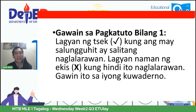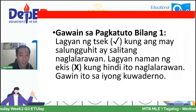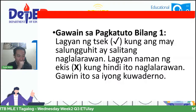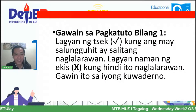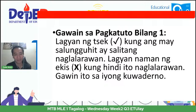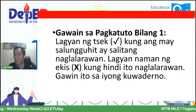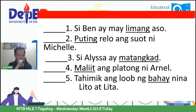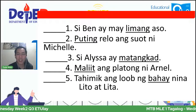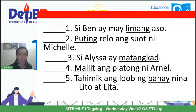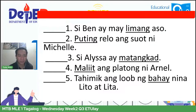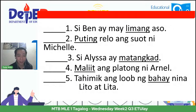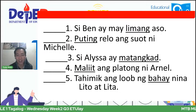Ngayon, magkakaroon tayo ng isang gawain. Titignan natin kung naintindihan ninyo ang ating aralin. Lagyan ng check kung ang may salungguhit ay salitang naglalarawan. Lagyan naman ng X kung hindi ito naglalarawan. Una, si Ben ay may limang aso. Pangalawa, puting rilo ang suot ni Michelle. Pangatlo, si Aliza ay matangkad. Pangapat, maliit ang plato ni Arnel. Panglima, tahimik ang loob ng bahay ni Nalito at Lita.